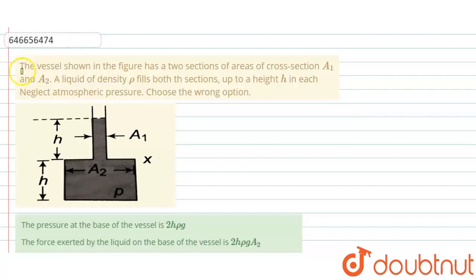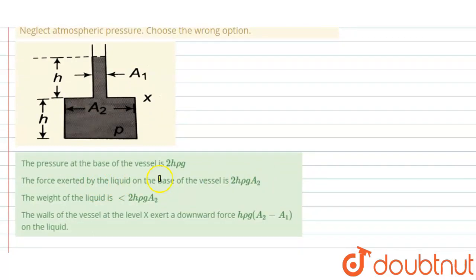Hello everyone, let me explain this question to you. The vessel shown in the figure has two sections of area of cross section A1 and A2. A liquid of density rho fills both the sections up to height h in each. Neglect atmospheric pressure, choose the wrong option. This is the diagram given and there are four options. We have to choose the wrong option.